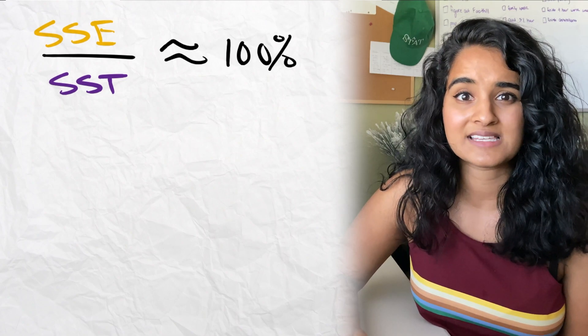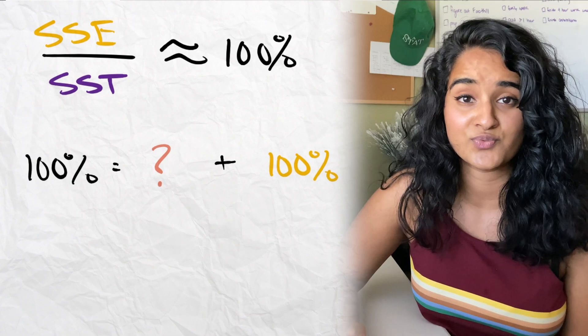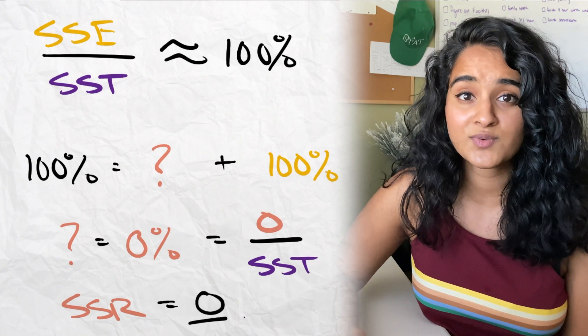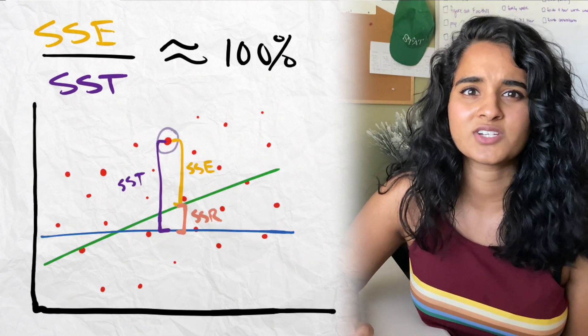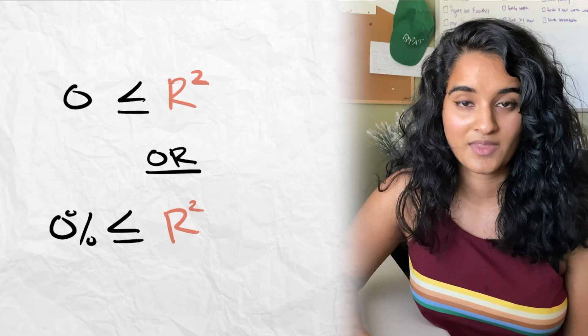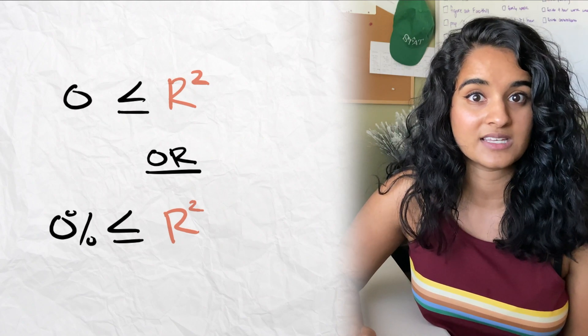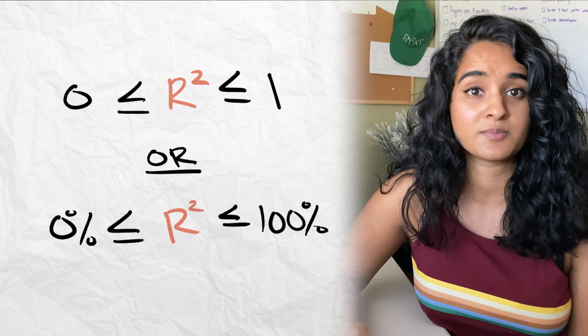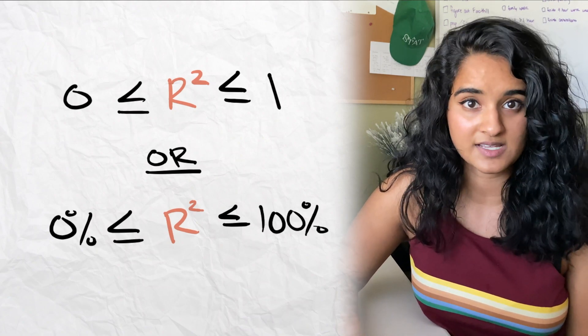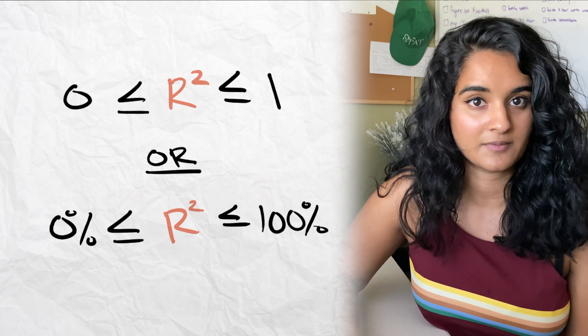Now the opposite: if our SSE is really high, that leaves r squared to be really low — close to zero — meaning SSR is close to zero. That makes sense because our data is all over the place, the regression line makes no sense, and there's no real correlation. Knowing this, the range of r squared is between 0 and 1, or 0% to 100%. It can't be negative because it's a sum of squared values, and it can't exceed 100% because r squared plus the percent of unexplained variation must add up to 1. That wraps up SST, SSR, SSE, and their relationship to r squared and regression.